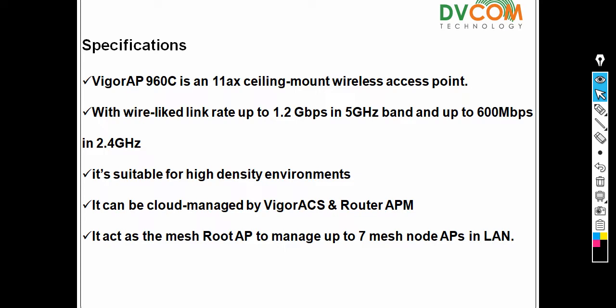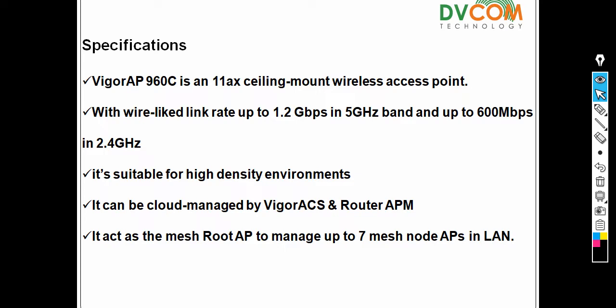You can manage this access point through cloud, through your router, or in standalone mode. Right now I'm going to show you how to do the configuration in standalone mode. By the way, this access point can act as a root AP and through it you can manage up to seven mesh nodes.